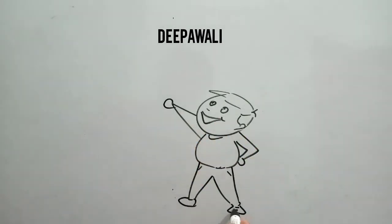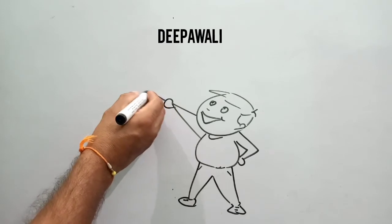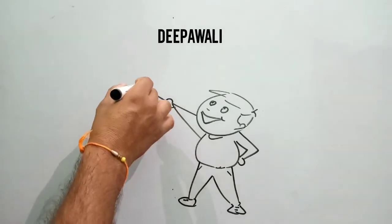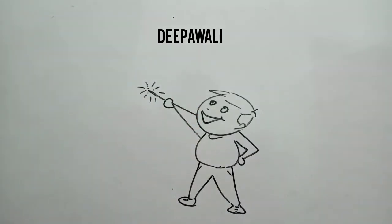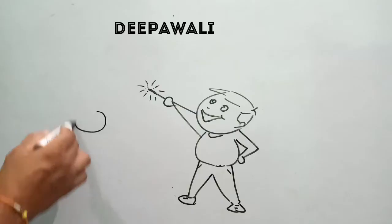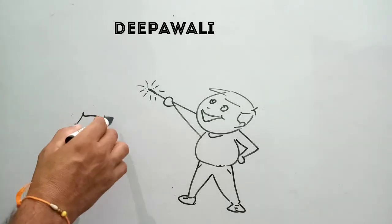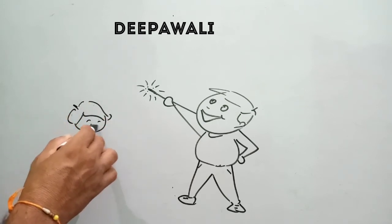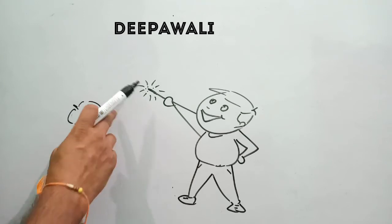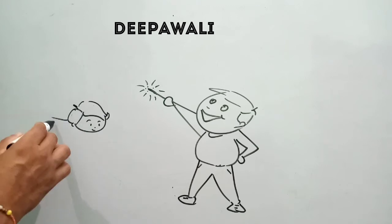You can color whatever you like. Students, this is another figure of a boy. I am drawing here with the same method — curved lines, oval shapes, diagonal lines. Students, I am drawing a boy figure here.